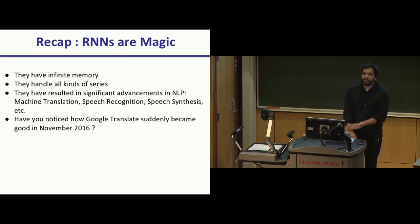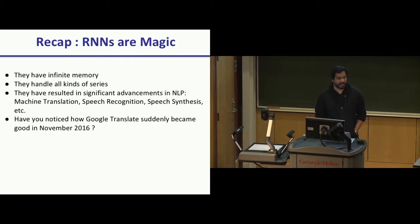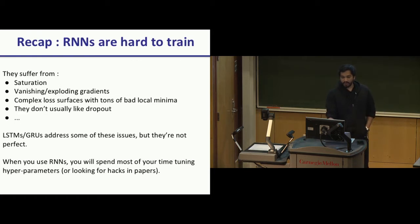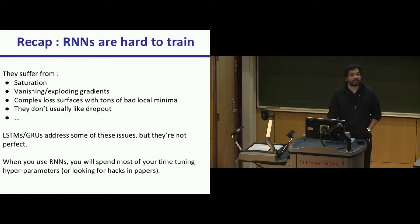Let's recap Professor Biksha's lecture. RNNs are these magical beasts — infinite memory or infinite response systems. They can handle many different types of time series data and have led to significant advancements in fields like NLP: language, machine translation, speech recognition, speech synthesis, et cetera. Most of you have seen how Google Translate overnight became actually good because they switched over to an RNN-based machine translation system. We've also seen that RNNs are pretty hard to train: saturation is a big problem, gradient vanishing and exploding gradients is a huge problem, and the loss surfaces are generally extremely complex.